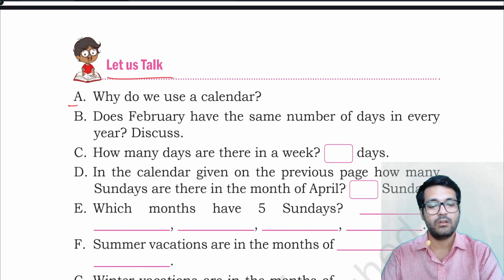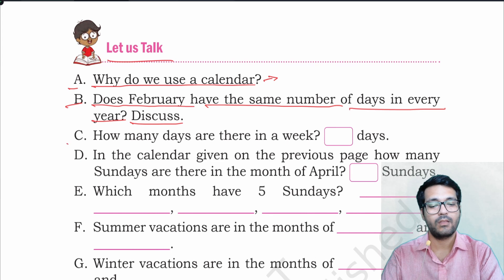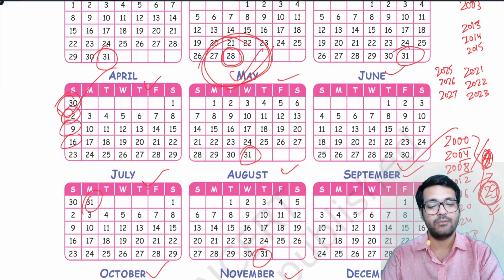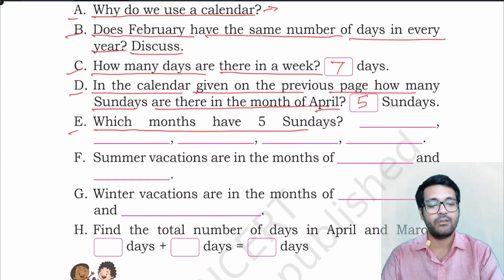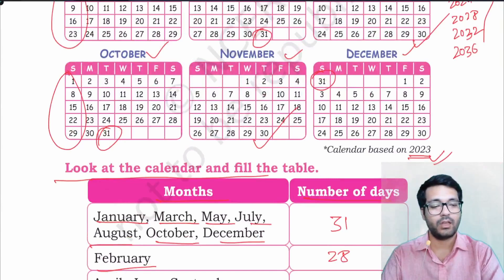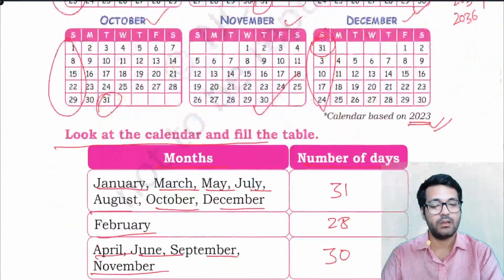Let us talk. A: Why do we use a calendar? To compare past, present, and future. B: Does February have the same number of days every year? No, February doesn't have the same number of days every year. C: How many days are there in a week? That is 7 days. D: In the calendar, how many Sundays are there in the month of April? There are 5 Sundays in the month of April. E: Which months have 5 Sundays? January, April, July, October, and December.